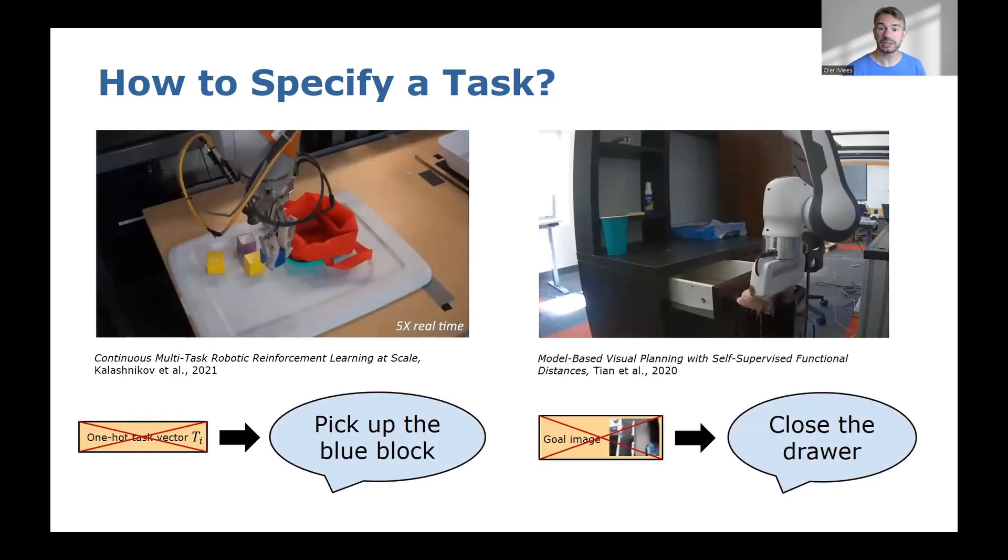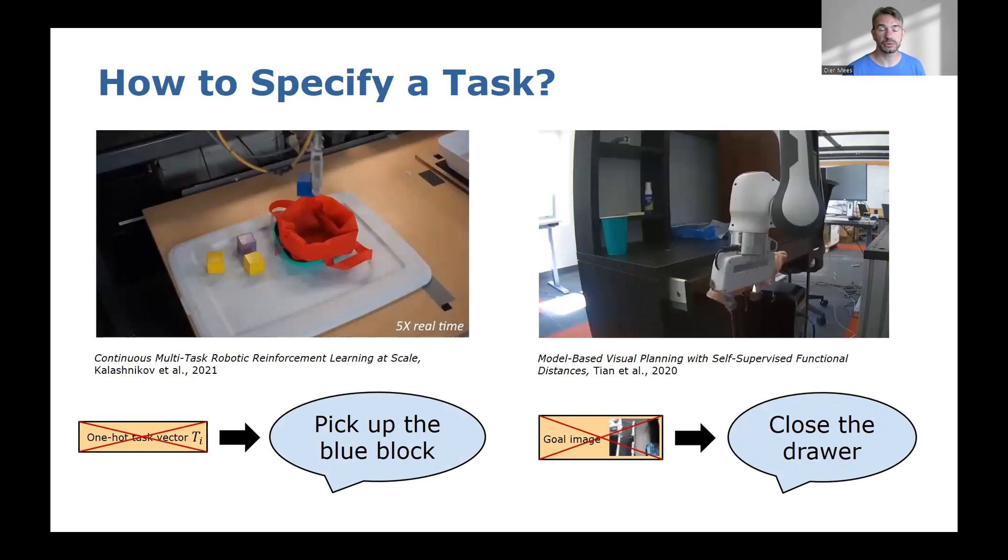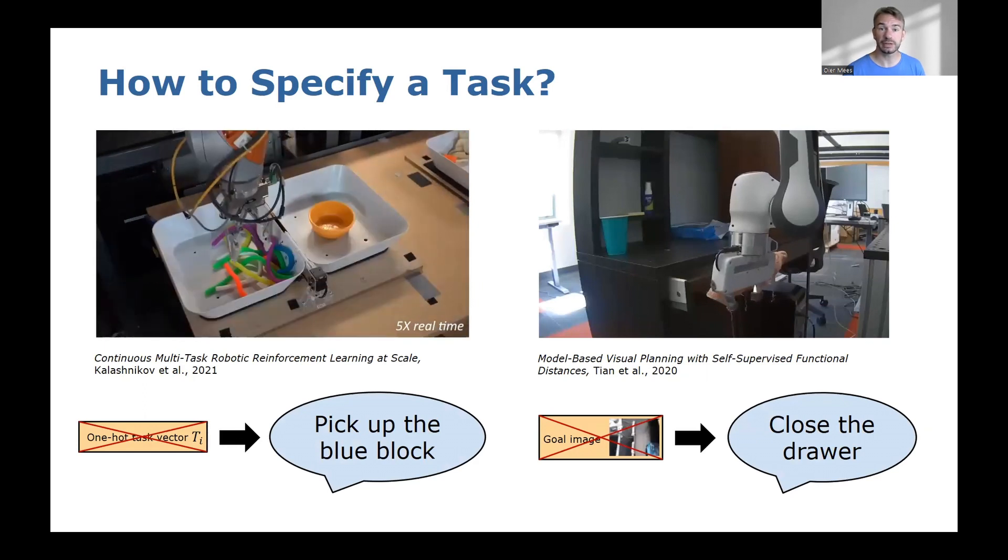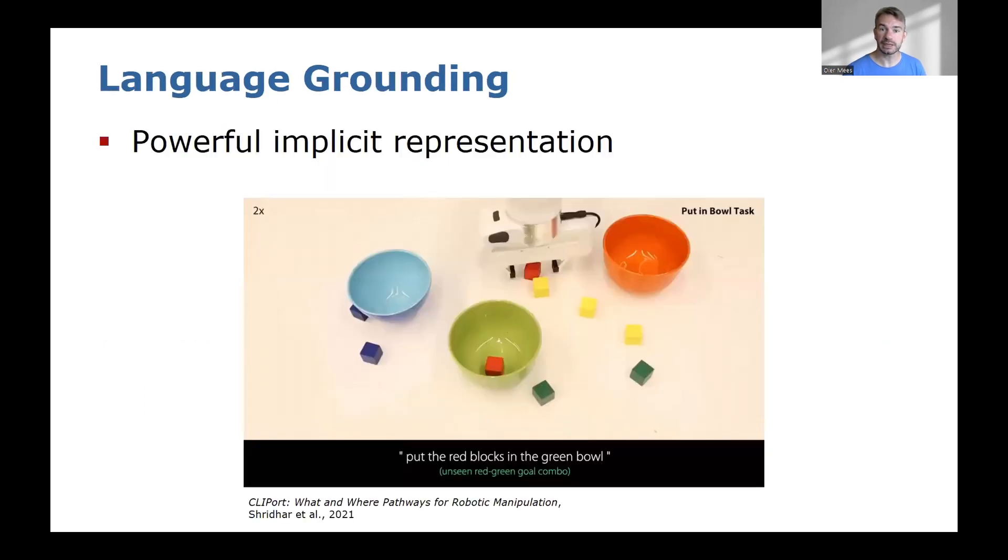Clearly, one of the most intuitive and flexible ways for humans to communicate with robots is natural language. Using language to guide robots is not only useful for scaling task specification, but it also acts as a powerful implicit representation.